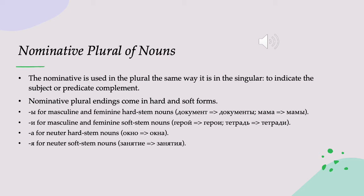Nominative plural endings come in hard and soft form. Remember that all nouns and adjectives are either hard stem or soft stem, and this is going to carry through in all of the forms — all of the case endings for all nouns.